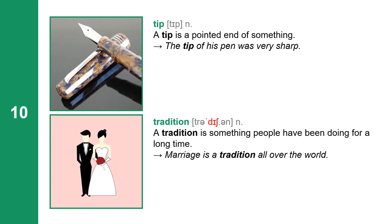The next word is tip. Tip is a noun. A tip is a pointed end of something. This is called a fountain pen — I don't think many people use fountain pens nowadays. The tip of his pen was very sharp.